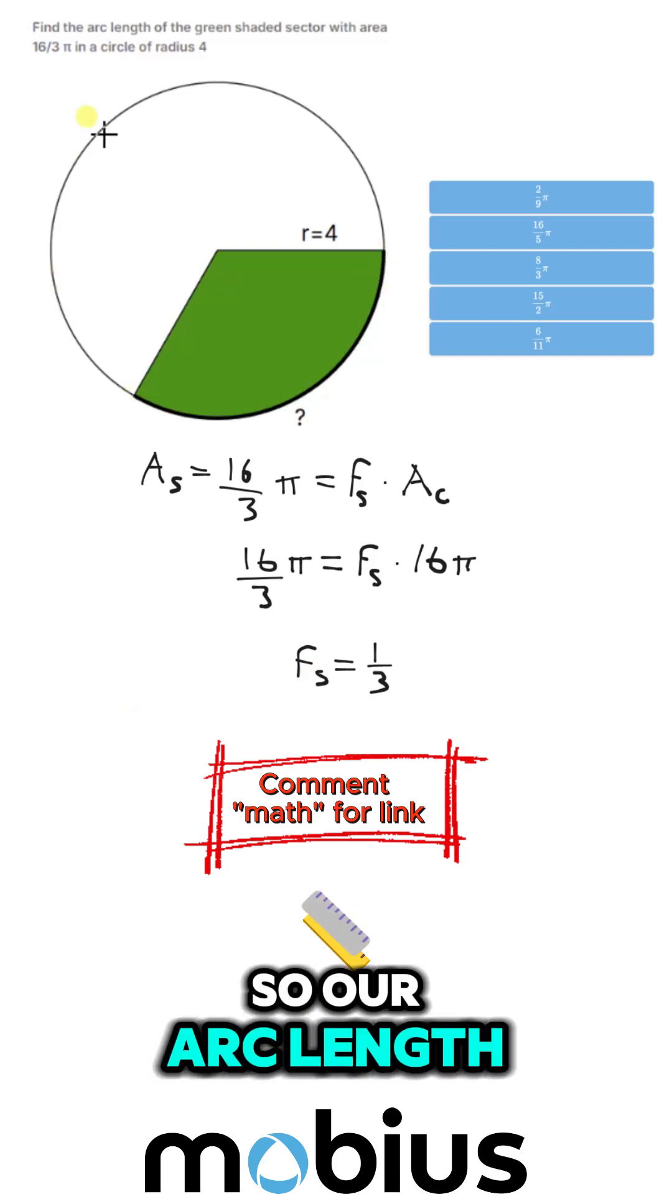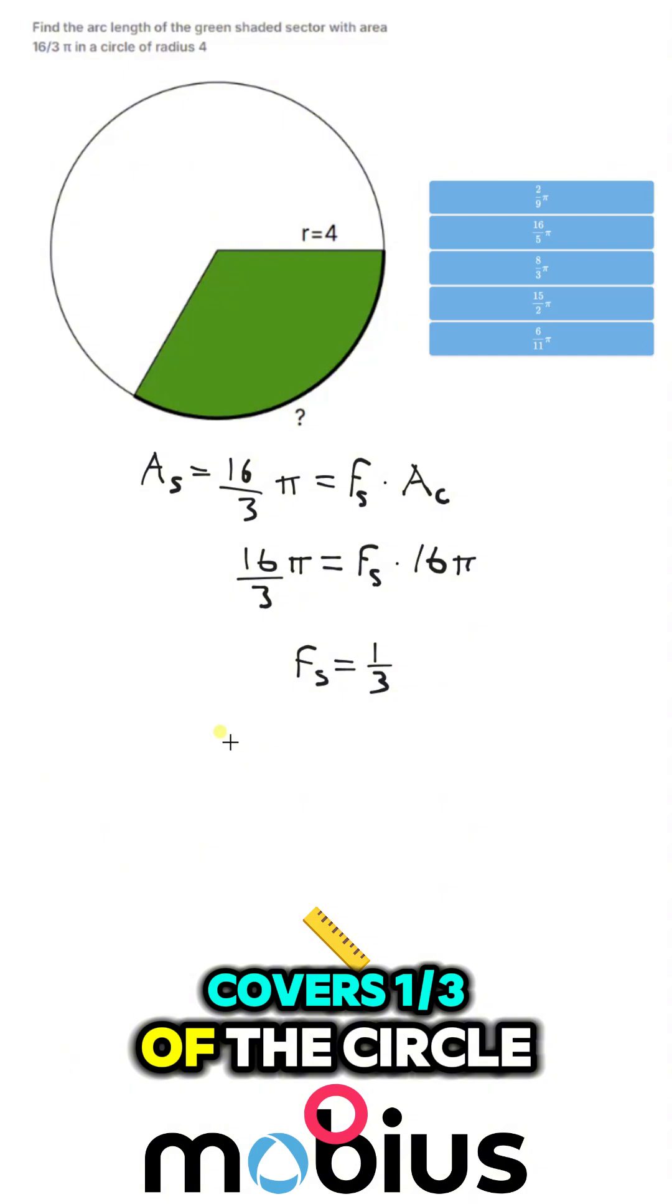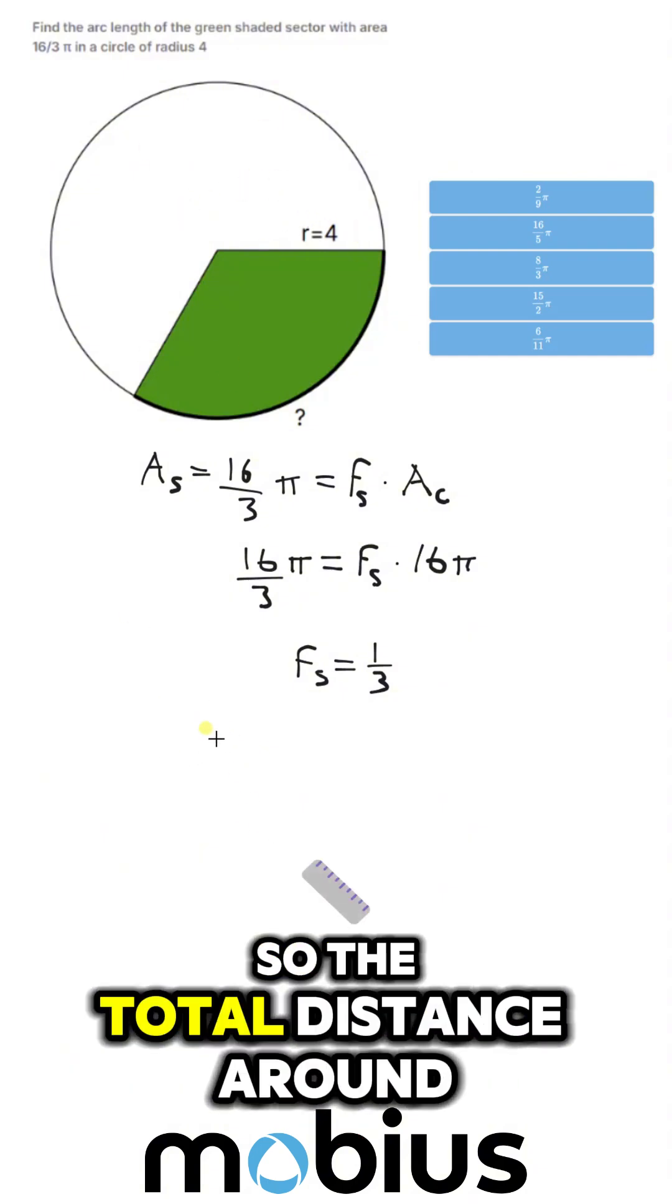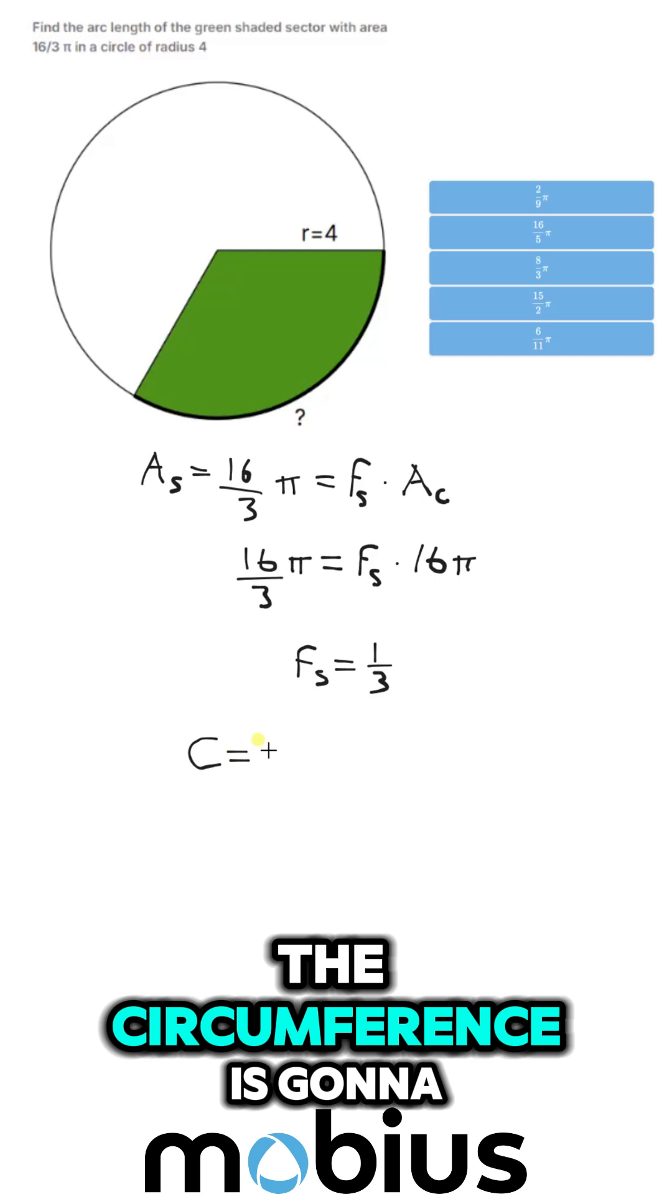So our arc length covers 1 third of the circle. So the total distance around the circle, the circumference,